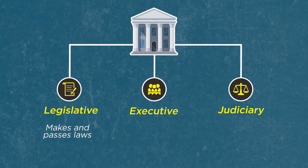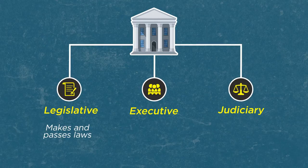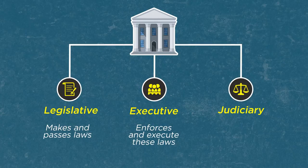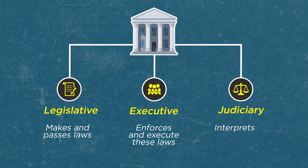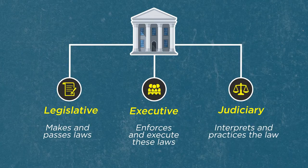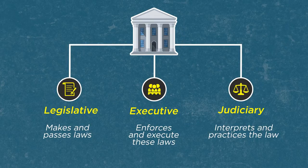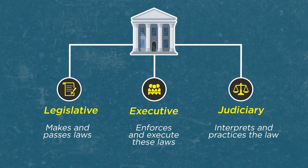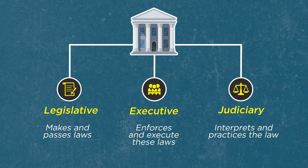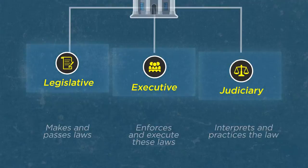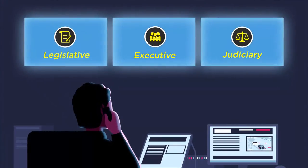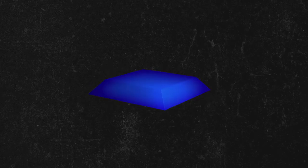One makes and passes laws, the other enforces and executes these laws, and yet another interprets and practices the law. A built-in check and balance system is automatically created, as each institution will check and monitor what the other does.